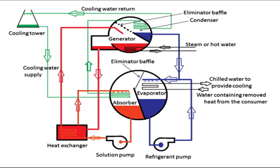Now we will see the working of the system. Chilled water from the cooling tower first enters the absorber, takes the heat of absorption, then enters the condenser where it takes the heat of condensation, and returns back to the cooling tower. In the absorber, lithium bromide is present. When water vapor from the evaporator enters the absorber, it is cooled by the cooling water circulation and absorbed by the absorbent, forming a weak solution.